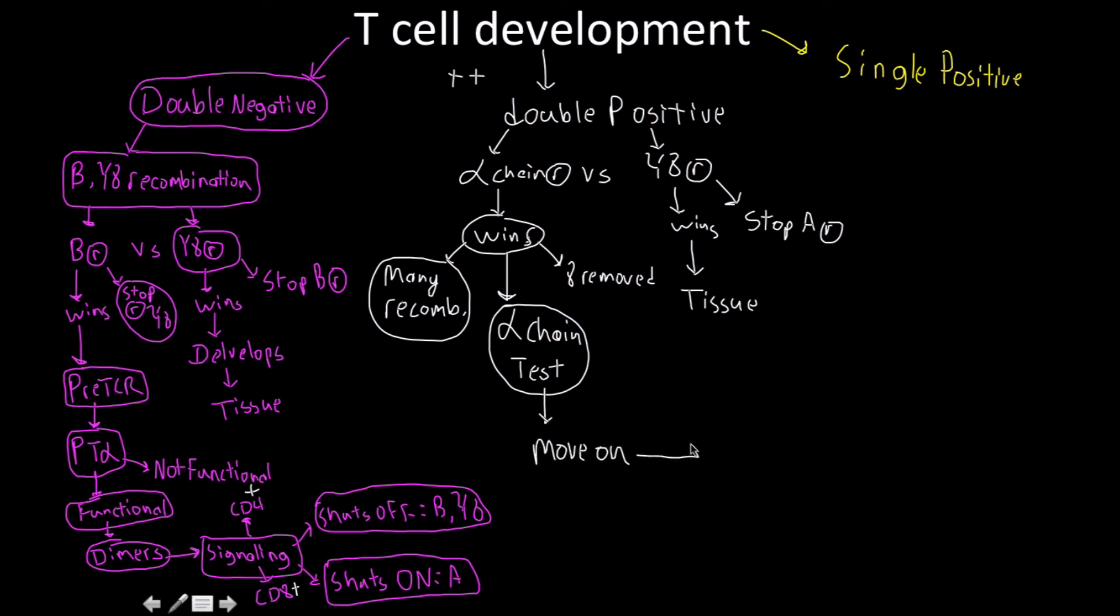We're going to go to the process of selection for both positive and negative. After that, it's the processes of selection that result in the production of single positive T cells.